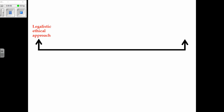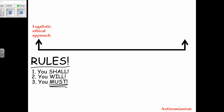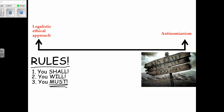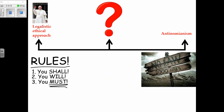On one extreme we have legalism — rules. On the other we have anti-nomianism — no rules. Fletcher thinks both are bad; we need something in the middle. Legalism is traditionally the form of Christian ethical decision making, from the Pope and natural law tradition down to Protestants who follow the Ten Commandments.